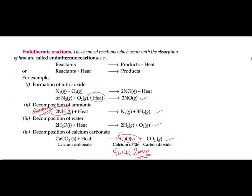Endothermic reactions are the opposite of exothermic — they absorb heat. Reactants absorb heat and then the reaction proceeds; sometimes the temperature of the mixture also goes down. Examples include: formation of nitric oxide — N₂ plus O₂ plus heat gives NO. Decomposition of ammonia (NH₃) is also endothermic — ammonia is a gas with a very typical pungent smell.